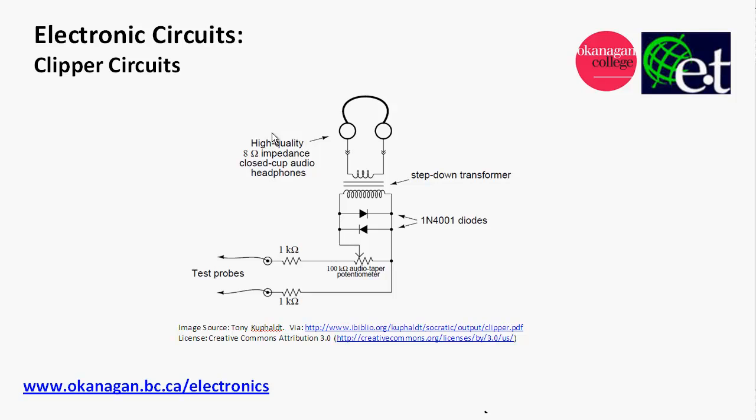Hello, it's David Williams from the Electronic Engineering Technology Department at Okanagan College. The video today is on clipper circuits. A clipper circuit is a circuit that either cuts off or clips a part of an AC signal, and diodes are typically used to do this.